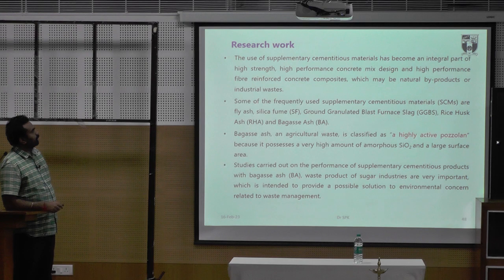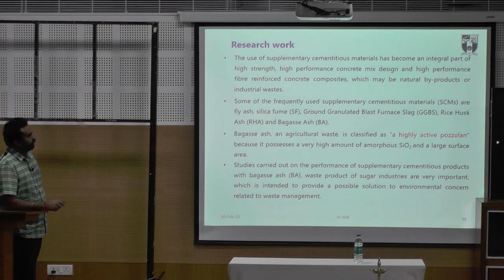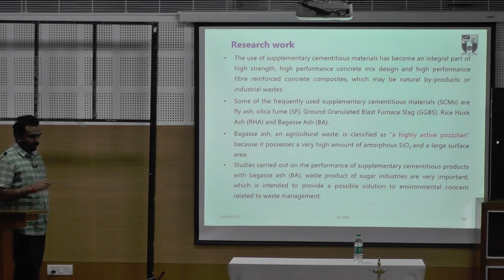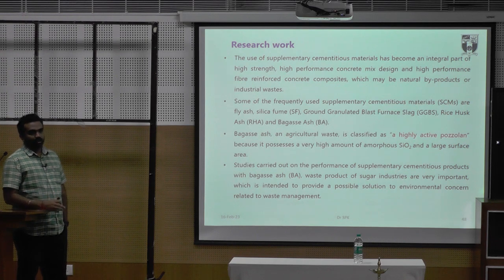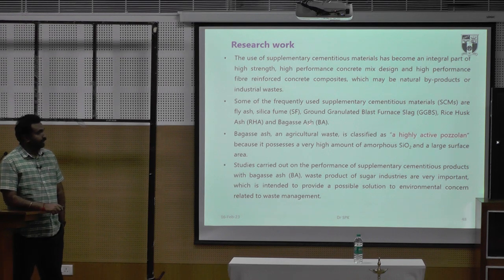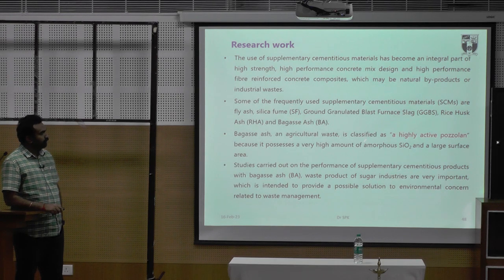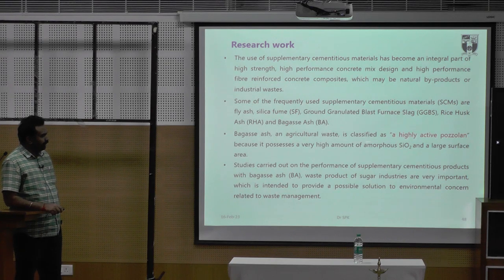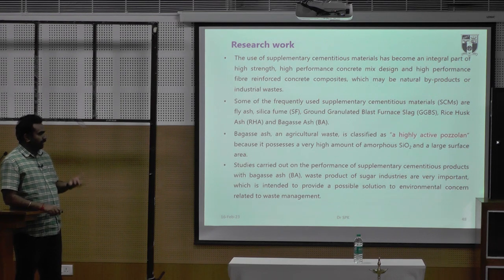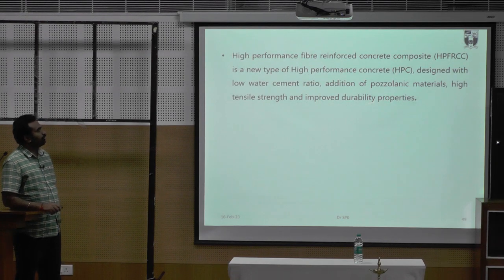The research work here is to use supplementary cementitious material in place of cement. Conventionally, people used to call it a waste — it is not a waste. It is a byproduct from an industry called sugarcane bagasse. There are many materials available: rice husk ash, bagasse ash, silica fume, GGBS — currently blended slag cement is available in the market. We have started working on bagasse ash, which is a highly active pozzolana with amorphous silica content and large surface area. We believe the required properties can be achieved with this waste management material.